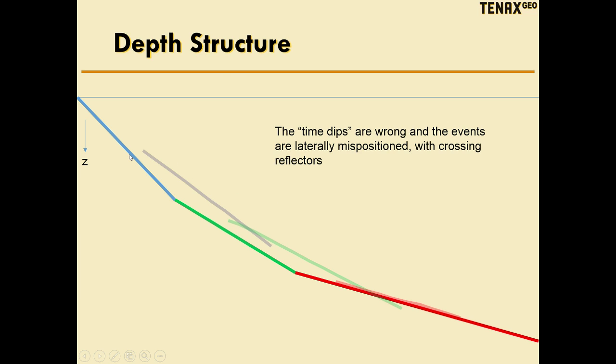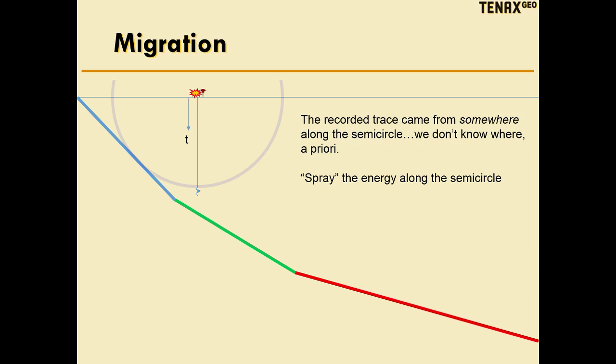So you would have mispositioned dipping layers, you'd have crossing events, and you'd have to essentially hand-correct these to their correct location using something called migration. Literally, this is the process of migration, and literally until about 1970, this was done by hand.